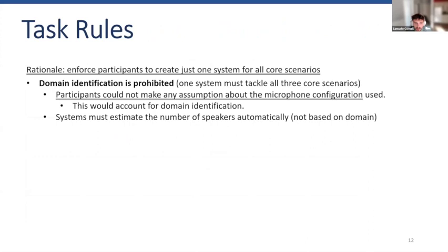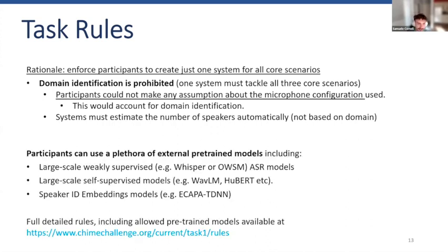The task rules are listed on the website. Basically, all the rules point to one rationale: participants must try not to do domain identification, because if they do, it defeats the purpose of the challenge. We want participants to produce systems that can generalize, so having a different system for each scenario is not very interesting. Aside from this, participants can also use external pre-trained models, including Whisper, pre-trained ASR models, or SSL models. There is a full list on the website.